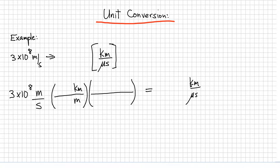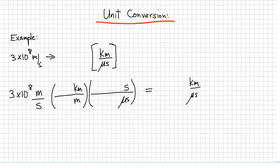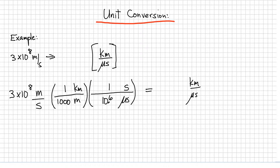I want to end up with kilometers in the numerator, so I have to have kilometers in the numerator here. For the seconds bracket, seconds is in the denominator, so I need to multiply by seconds in order to eliminate it. At the end, I want to get microseconds, so you have to divide by microseconds — microseconds goes in the denominator. And I know that in one second there are 10 to the 6 microseconds.